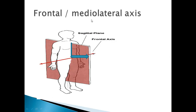The frontal axis is also called the medial-lateral axis. Medial-lateral axis means that an imaginary line goes through medial to lateral. The concept of medial and lateral applies here — an imaginary line goes medial to lateral. And the corresponding plane is the sagittal plane. So this is the plane, and this is the imaginary line — that is the frontal axis.